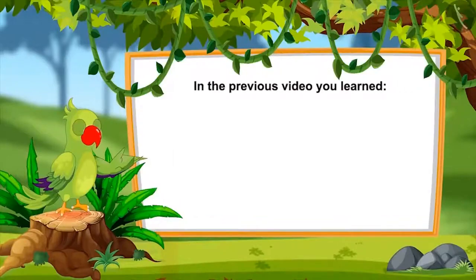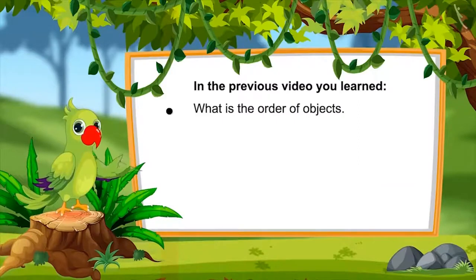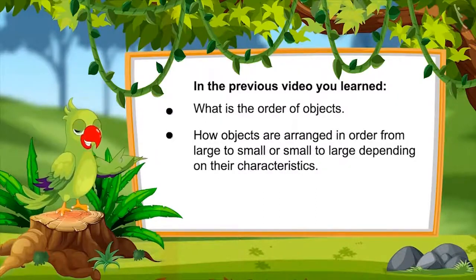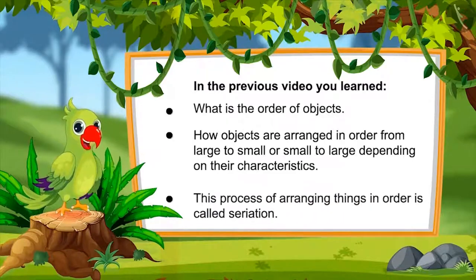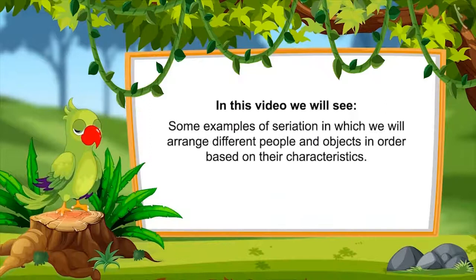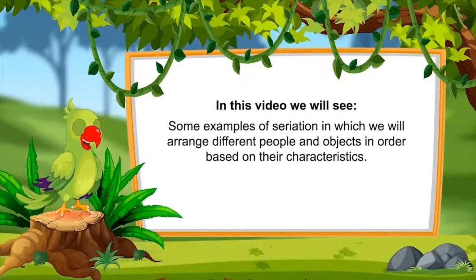So children, in the previous video you learnt what is the order of objects — how they are arranged in large to small or small to large order based on their characteristics. And this process of arranging things in order is called seriation. In this video we will see some examples of seriation in which we will arrange different people and objects in order based on their characteristics.